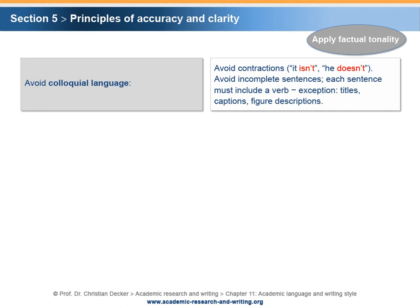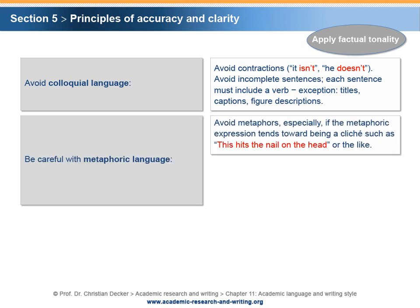In accordance with maintaining an objective perspective, a scientific author should apply a factual tonality. Absolutely avoid colloquial language in all its manifestations — for example, avoid contractions such as 'it isn't,' 'he doesn't,' etc. Furthermore, do not write incomplete sentences; each sentence must include a verb. Exceptions are titles, captions, and figure descriptions. Figurative language — for example, metaphors and analogies — is a sophisticated way of writing; however, it is not always considered appropriate in academic writing. Therefore, be careful with adopting or creating metaphors and analogies in your texts.